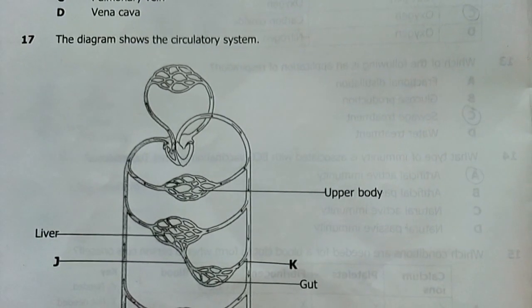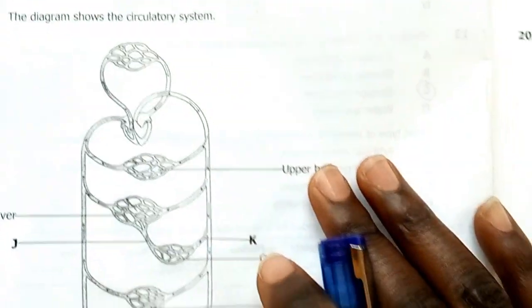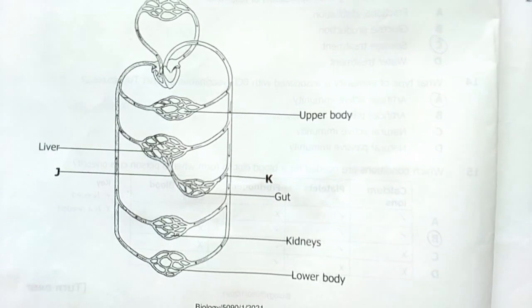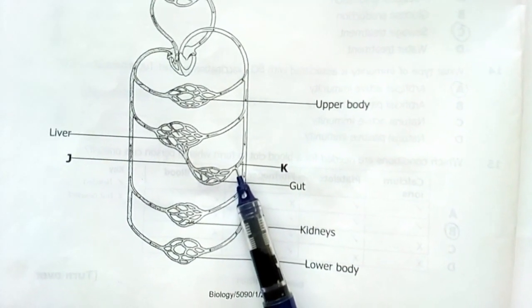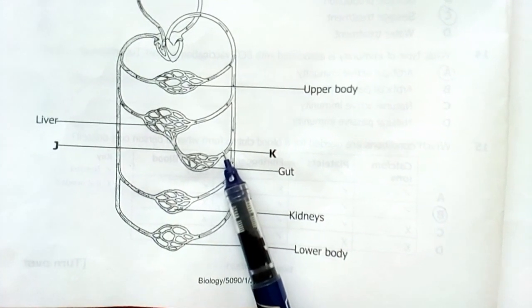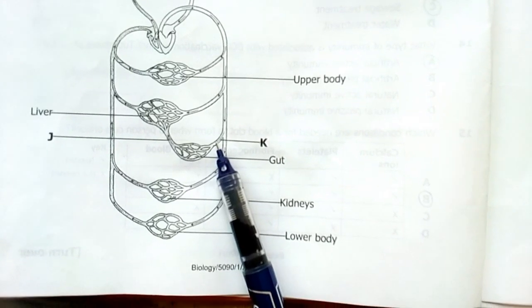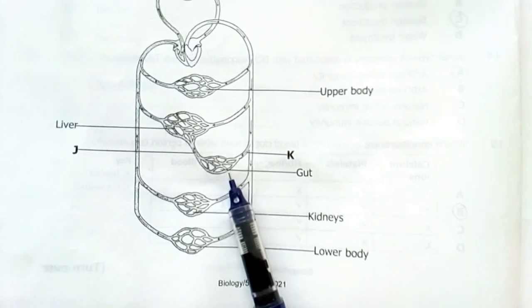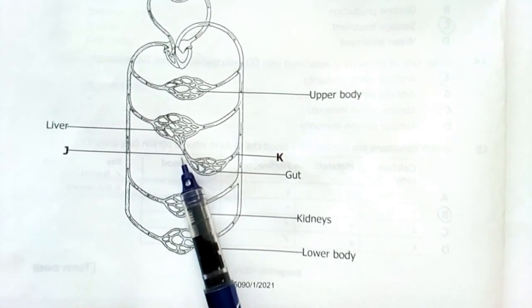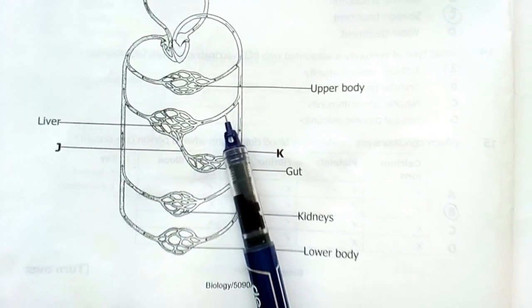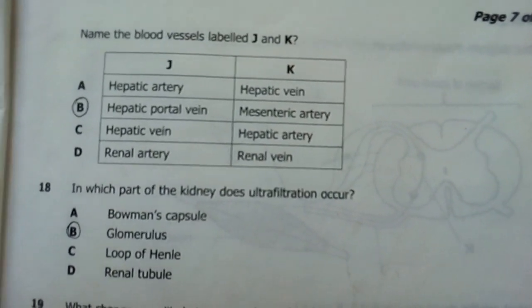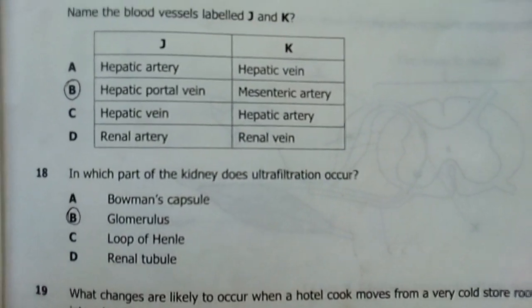Number 17, the diagram shows the circulatory system. Name the blood vessels labeled G and K. K is actually the mesenteric artery, which is an artery which leads or carries blood towards the intestines, the gut. This is your gut. And then J is, this is the hepatic portal vein. This is your hepatic vein. Then that's the hepatic artery, which goes directly to the liver. So our answer here comes out as B. Hepatic portal vein and mesenteric artery.